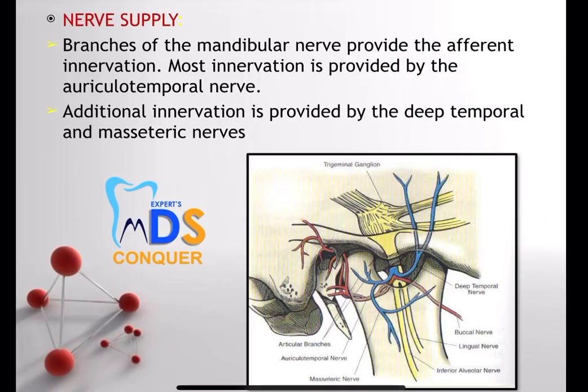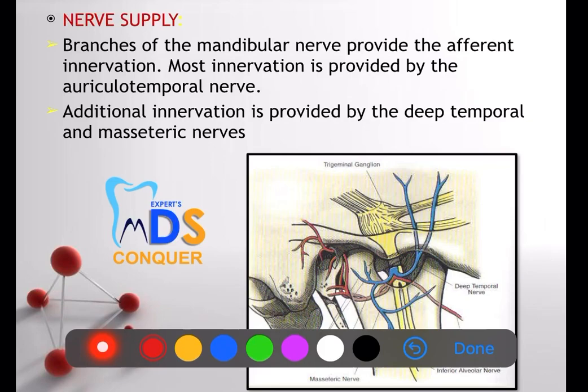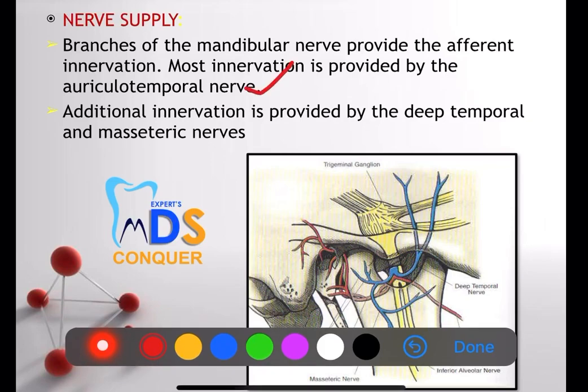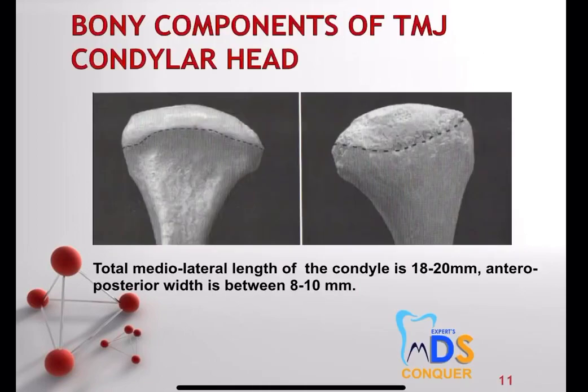Coming to the nerve supply: the mandibular nerve provides the efferent innervation; additionally it is also provided by the deep temporal and the masseteric nerves. Most of the innervation is actually provided by the auriculotemporal nerve. So you have to write the mandibular nerve and the auriculotemporal nerve.